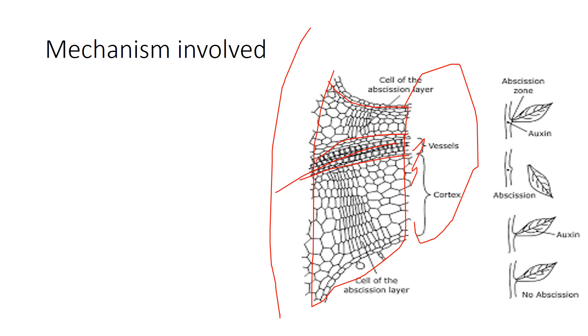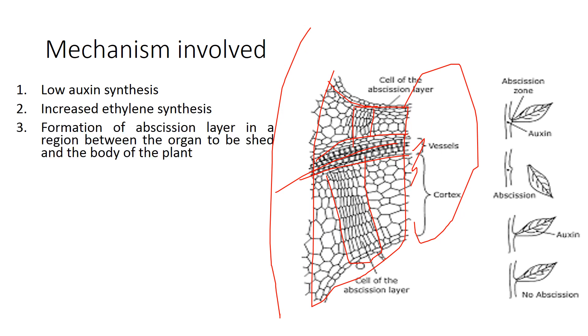This layer you can see starting from here - this is basically the abscission layer. The abscission zone synthesizes cell wall degrading enzymes, for example, pectinase and cellulase.